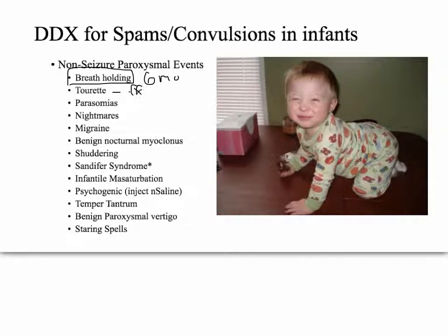Tourette's we can rule down from the family history. Parasomnias — another word for night terrors, also including sleepwalking — usually starts right around age three. Nightmares are a less severe form of night terrors, also around age three. Most of these non-seizure paroxysmal events will have normal EEGs, but migraines are an exception. When migraines are associated with the vasculature, EEGs can be epileptiform. In fact, migraines and epilepsy are sometimes linked — occipital epileptic seizures and occipital migraines are highly correlated, though one doesn't directly cause the other.